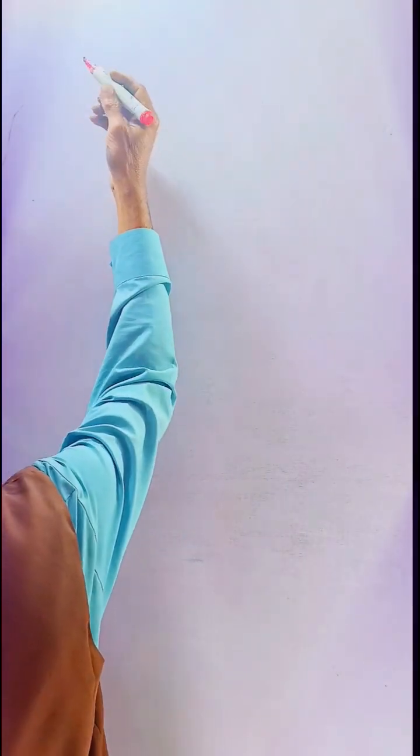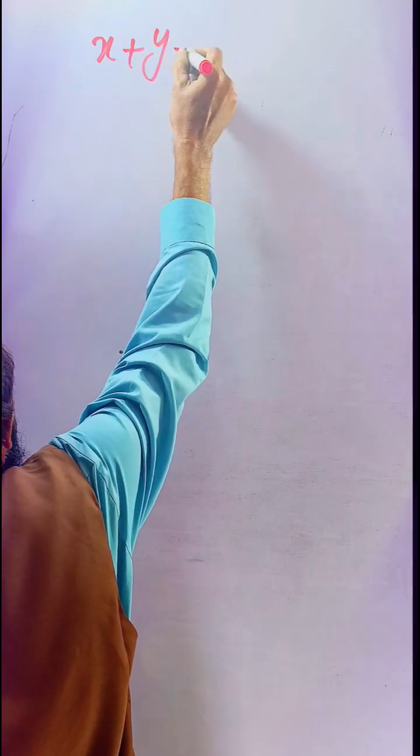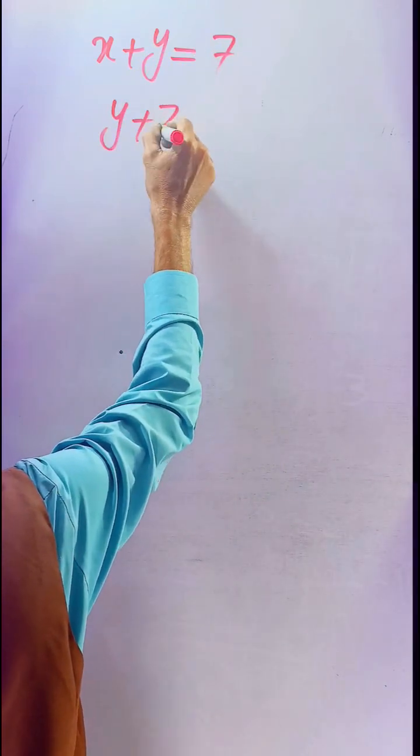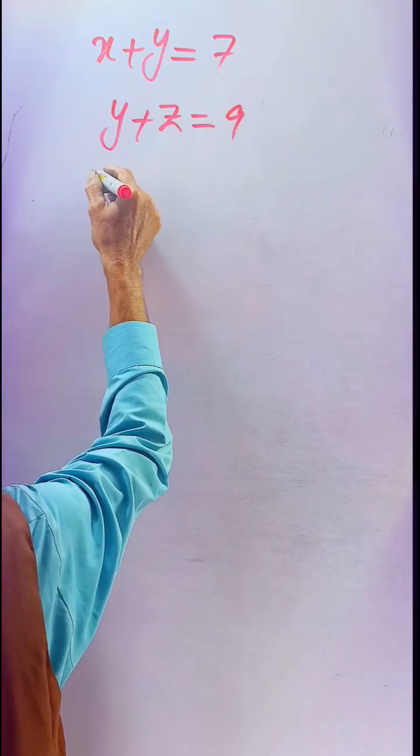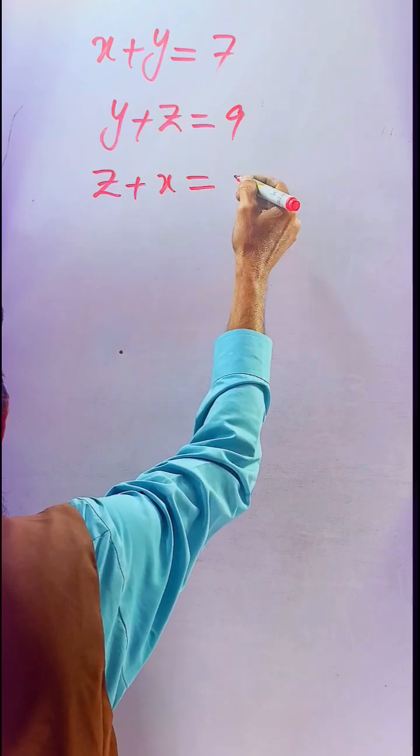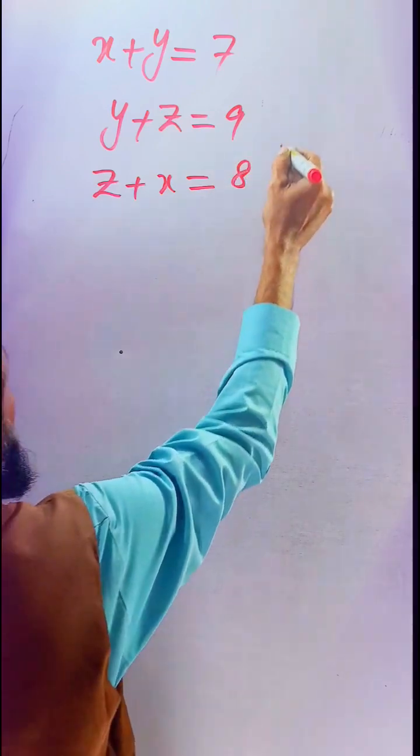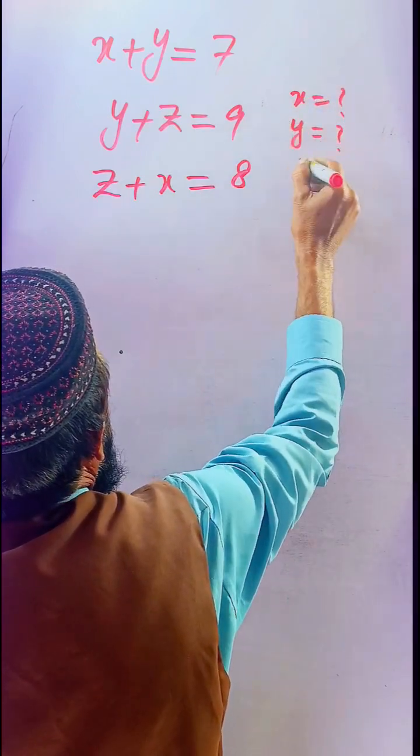x plus y equals 7, y plus z equals 9, and z plus x equals 8. How can we calculate the values when x, y, and z are all unknown?